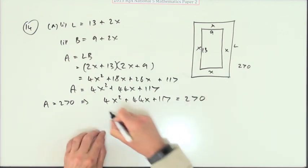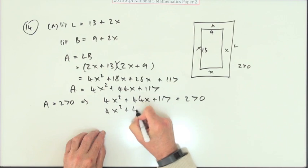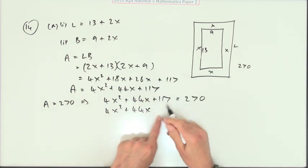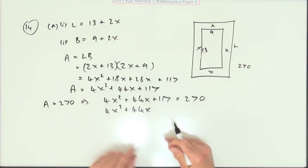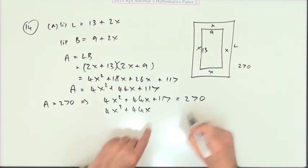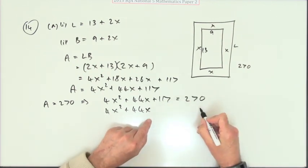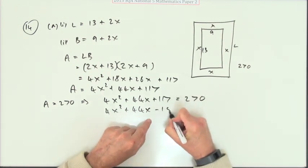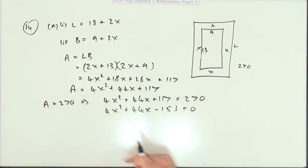Almost there. Just take that over to this side. 4X squared plus 44X. It'd be nice if this just came to another multiple of 4. You'd have a nice wee quadratic that may well factorize. But it doesn't. It comes to minus 153. Just as it said.